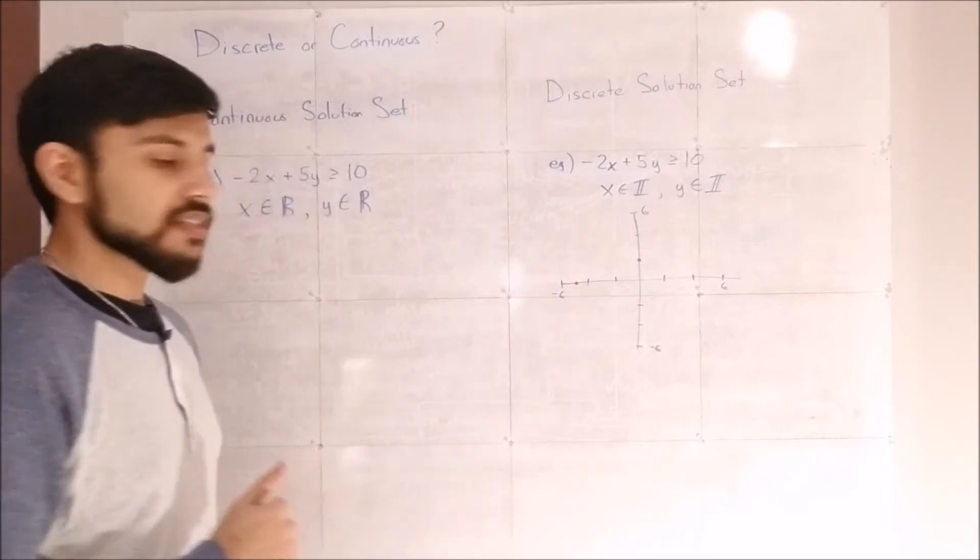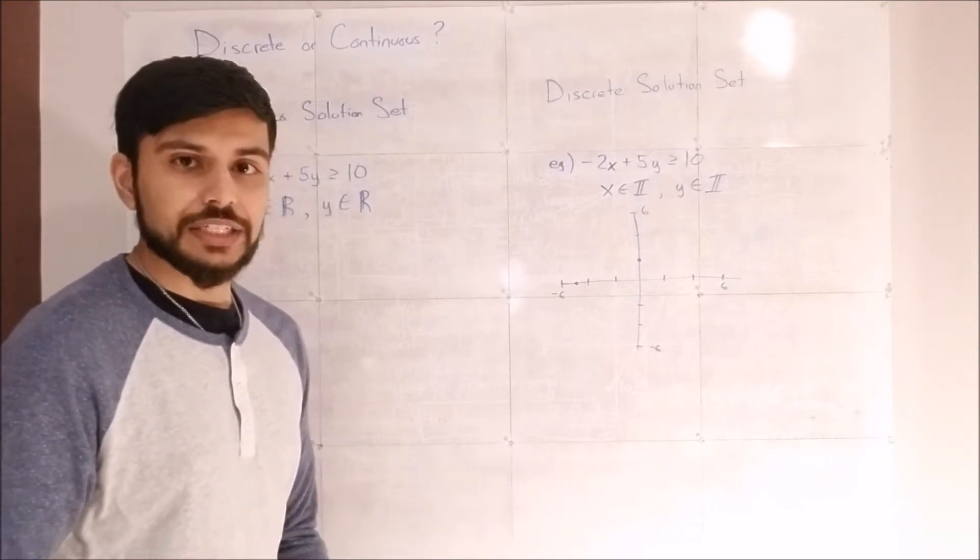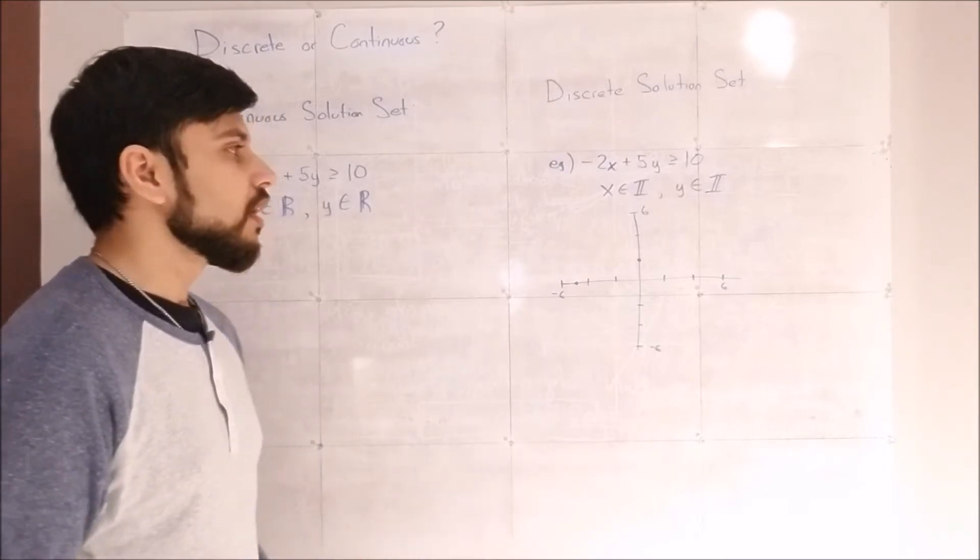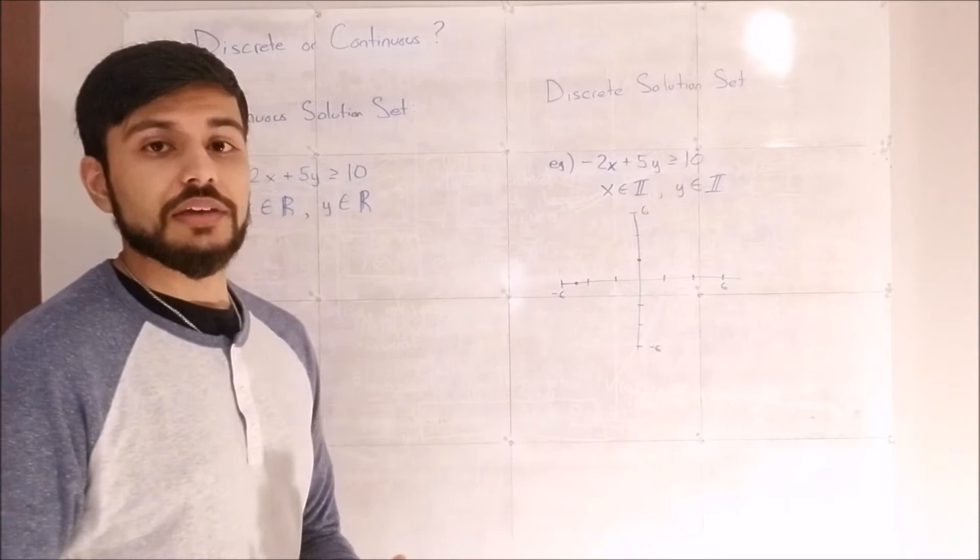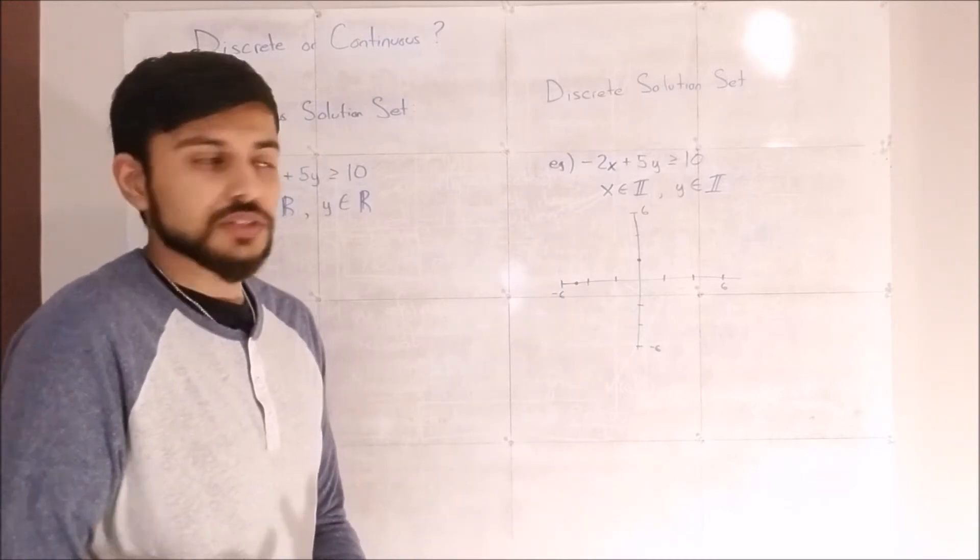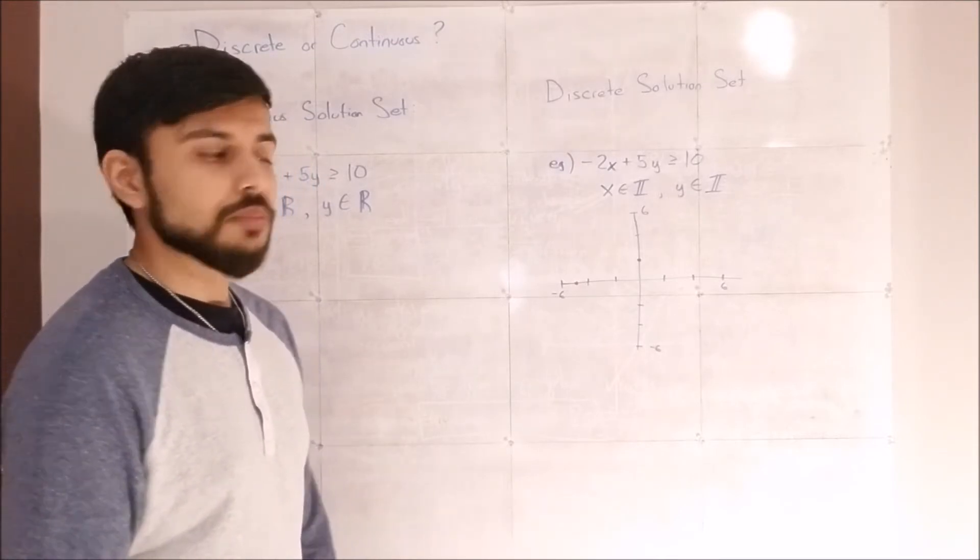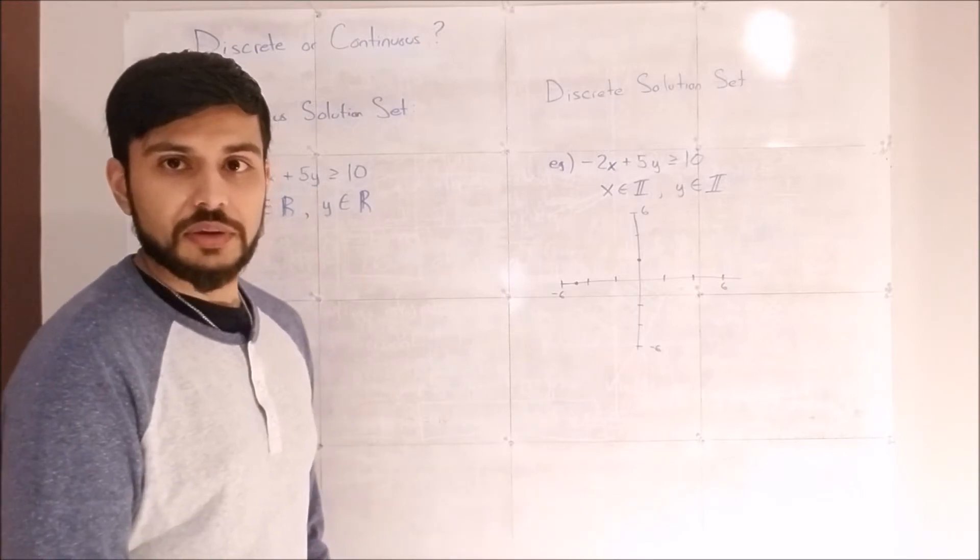In this case, x is an element of all integers. So you can only highlight integers, you cannot highlight irrational numbers in this case. So an integer is any positive or negative number. It cannot be a fraction. A fraction is invalid. So five and a half doesn't work. Pi doesn't work because it's an irrational number. You can only pick a regular positive or negative number.